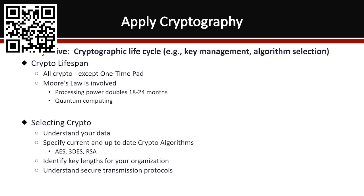When selecting crypto, you need to understand what data you're trying to protect, which will specify the current and up-to-date crypto algorithms to use. You have AES, Triple DES, and RSA — each are different algorithms available to protect your data. You have to determine which is the best to use within your environment and identify key lengths for your organization: how many bits. You need to determine what the best option is for your organization.